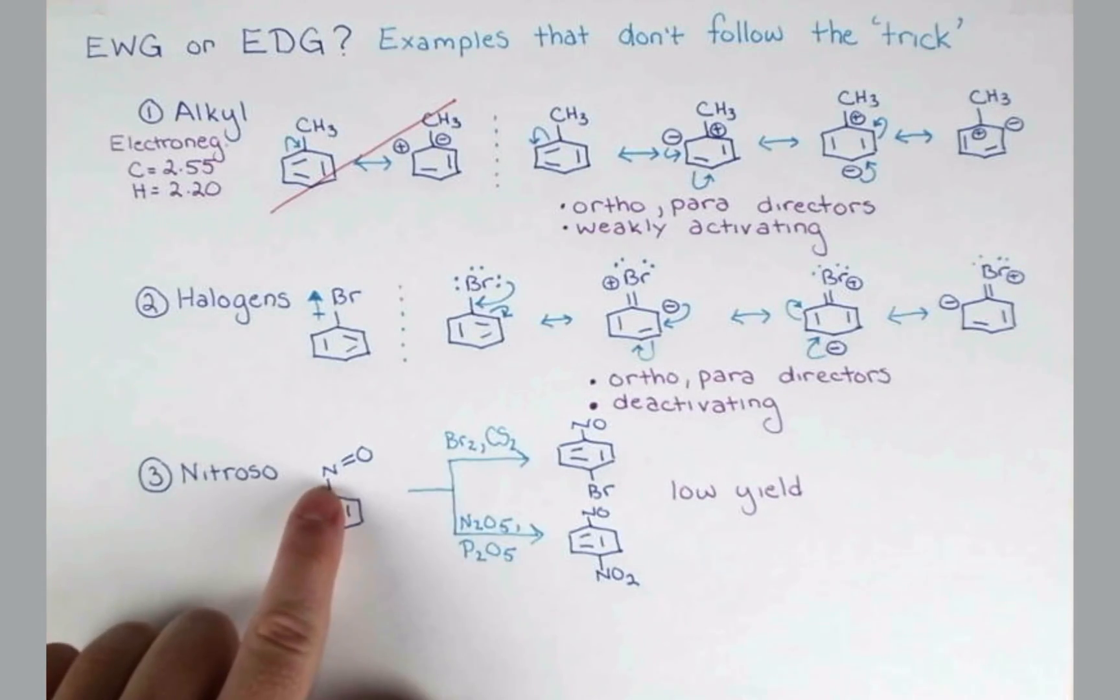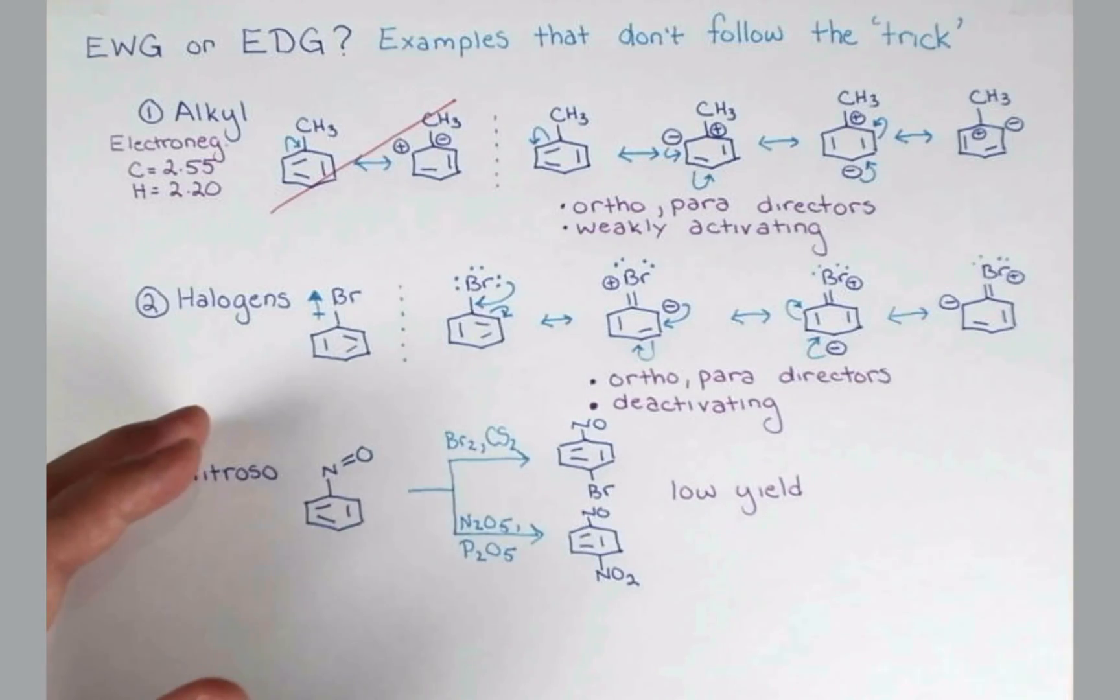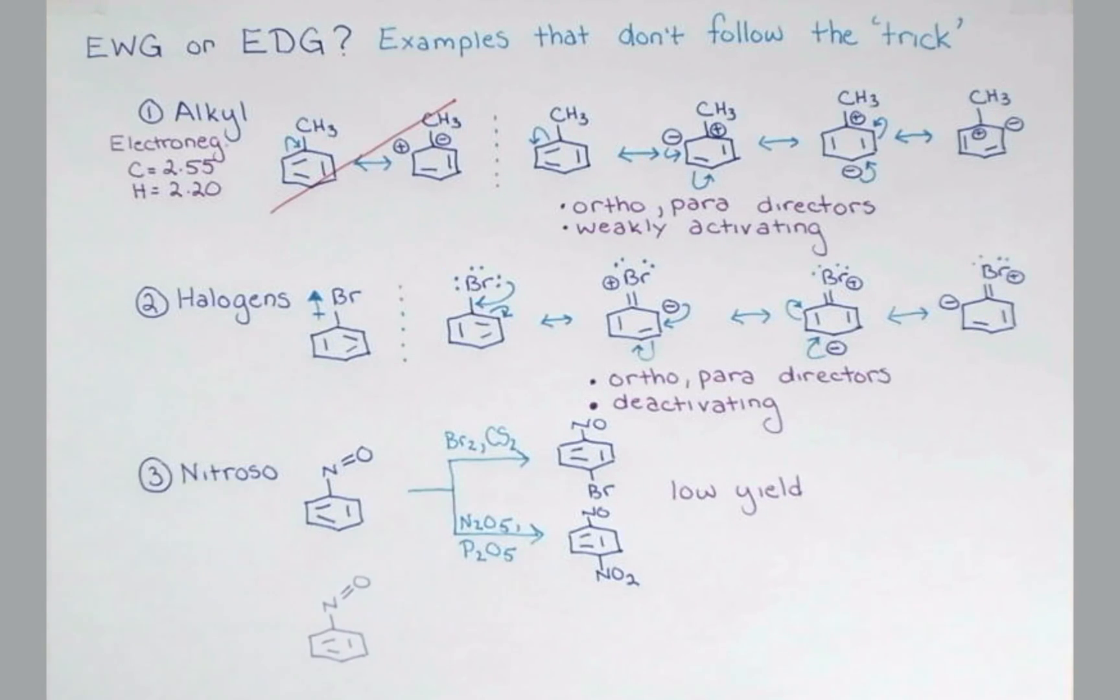So typically once people make the nitroso compound, they mean to react the nitroso group. And since it's so reactive, it's really atypical to be doing other reactions on it like EAS. But that doesn't mean your professor won't think that this is a really cool problem and ask you to consider it and think about it. So we have to understand why this goes the way it does.